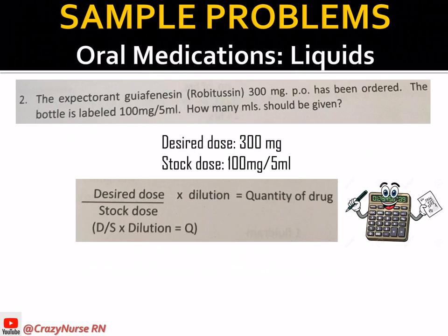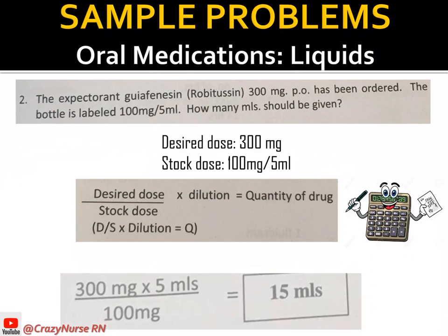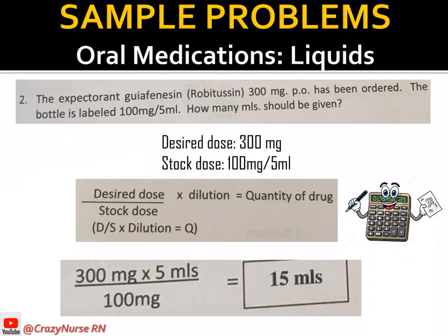The formula for liquid form is: desired dose over stock dose times dilution equals quantity of dilution. So we have 300 milligrams over 100 milligrams times 5 ml. Cancel the milligrams units; 300 divided by 100 times 5 equals 15. Retain the ml since it was not cancelled. We will give 15 ml of this medication to yield 300 milligrams.